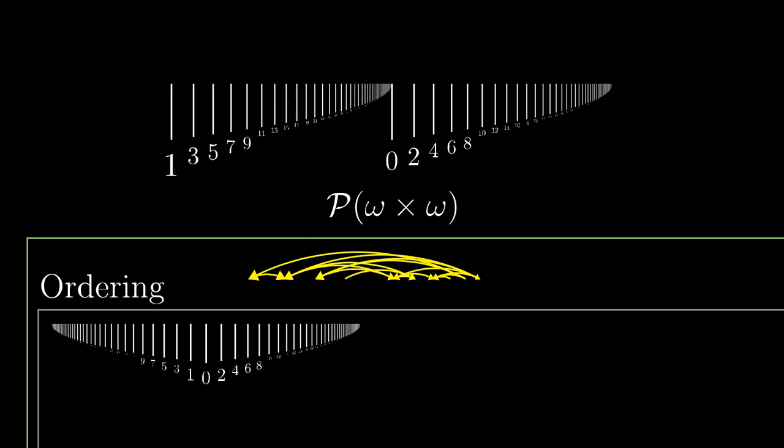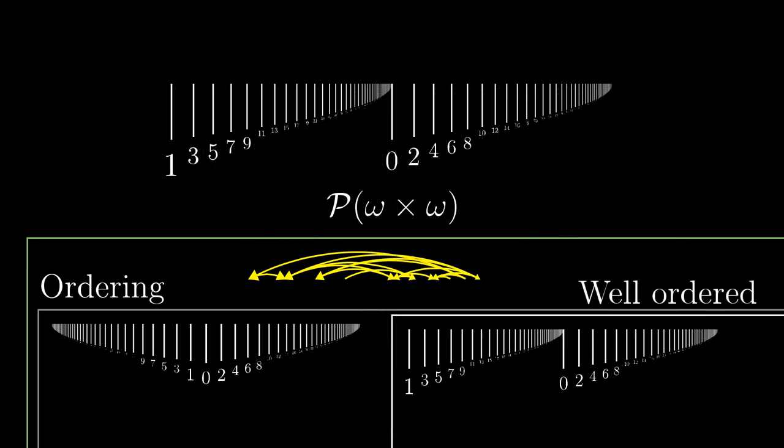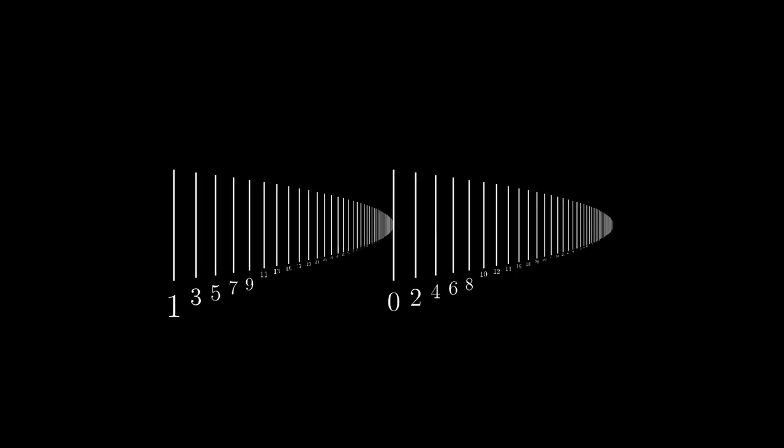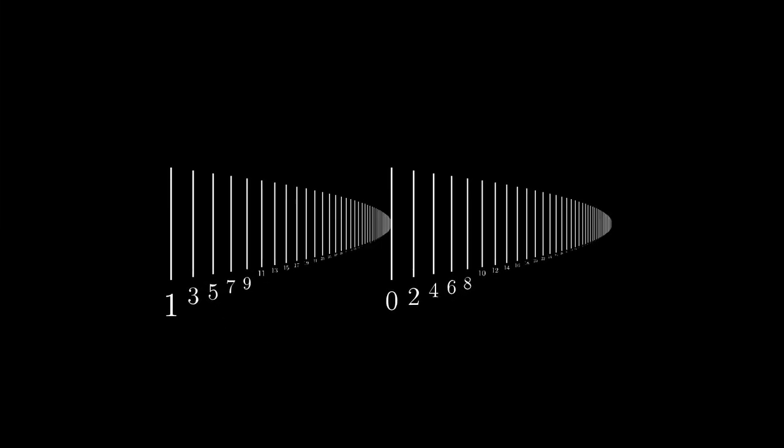Sometimes we obtain even a well-ordered set — there is no infinite decreasing sequence in the ordering. So we have a further subset inside the set of all orderings: the set of all the well-orders of natural numbers, and that is the set we use for building omega 1.